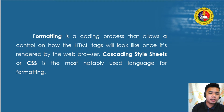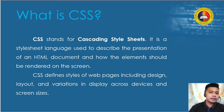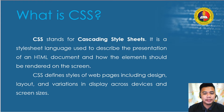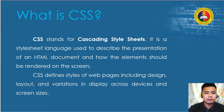In our previous discussion about coding, formatting is a process that allows control over how HTML tags look once rendered on the web browser. CSS — Cascading Style Sheets — is one of the most notably used languages for formatting. CSS is a stylesheet language used to describe the presentation of an HTML document and how elements should be rendered on screen. CSS defines styles including design, layout, and variation in display across devices and screen sizes.